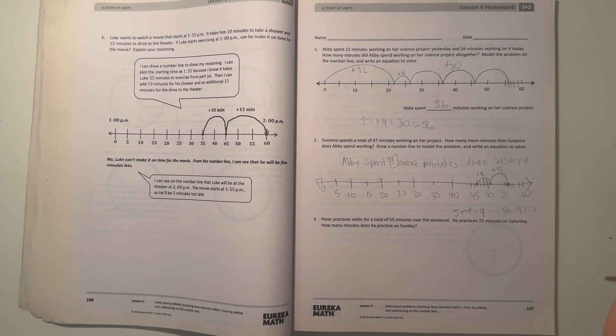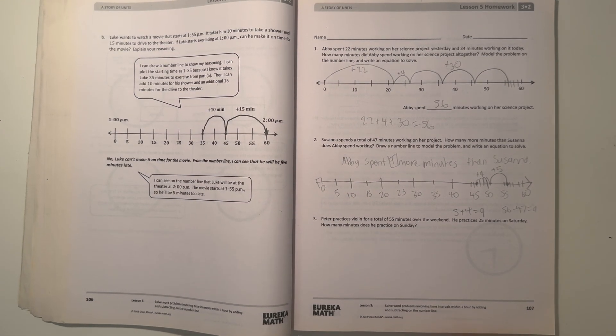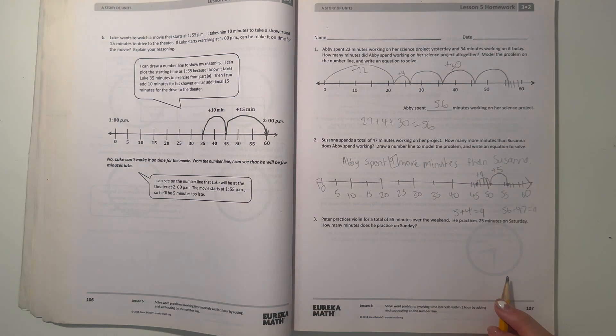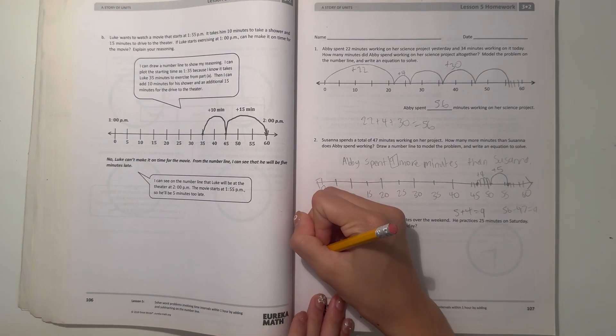Number three, Peter practices violin for a total of 55 minutes over the weekend. He practices 25 minutes on Saturday. How many minutes does he practice on Sunday? So we know on the weekend, there's Saturday and Sunday, and we know that he practiced for 55 minutes total, but he practiced 25 minutes on Sunday. So we can draw a number line.